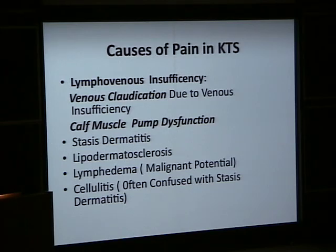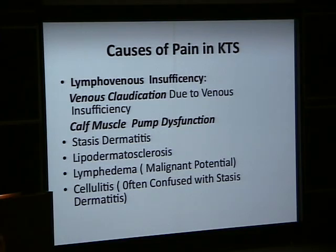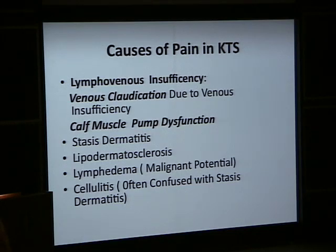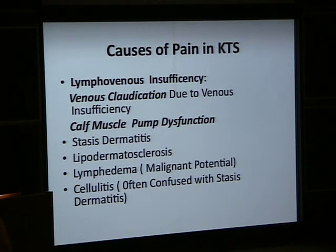Another element is calf muscle pump dysfunction. These patients may have relatively normal venous valves — unlike the most common cause of chronic venous insufficiency, which is damage to venous valves. Here, the valves may function relatively properly, but there is abnormality of the muscle. The muscle needs to pump for the veins to be squeezed; without a good pump, blood will not move. This is a critical component in KTS. There is also stasis dermatitis, an inflammatory condition secondary to chronic venous insufficiency, and lipodermatosclerosis — fibrosis and scarring of the subcutaneous tissue and fat.